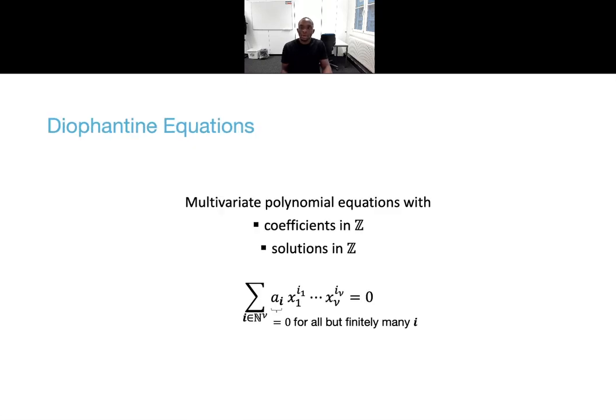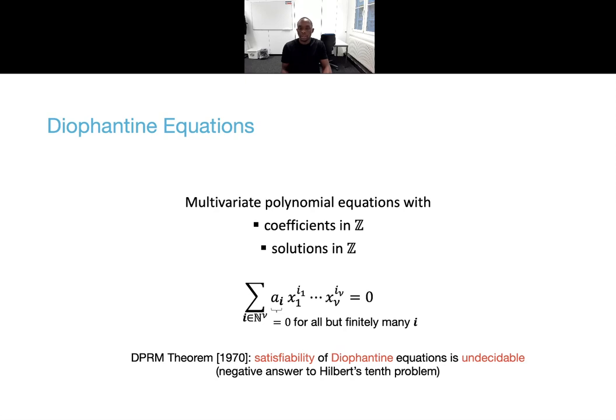A Diophantine equation is a multivariate polynomial equation with integer coefficients, and for which the solutions are also sought in Z. Matiyasevich proved in 1970 that the problem of deciding whether any given polynomial equation has a solution is undecidable. So he gave a negative answer to Hilbert's 10th problem, but it may be possible to prove or argue knowledge of a solution if it is known to a party.